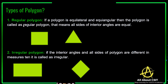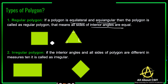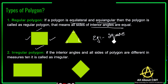Now coming to the types of polygon. The different types are: regular polygon, irregular polygon, convex polygon, and concave polygon. A regular polygon means a polygon that is equilateral and equiangular — all the sides of the polygon are equal and all the interior angles are equal. Examples of the regular polygon are the square and the equilateral triangle. These two are regular polygons because the sides are equal and the angles are equal.